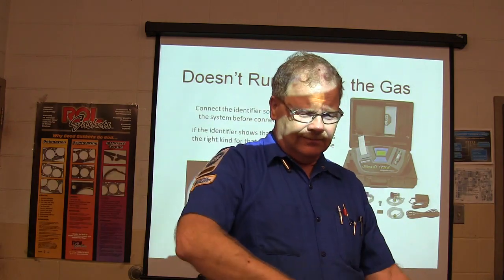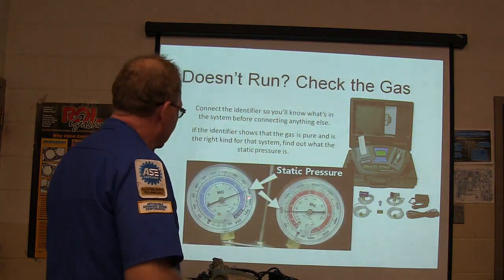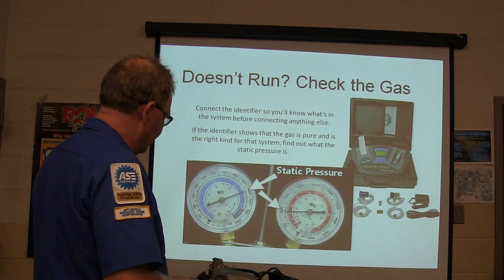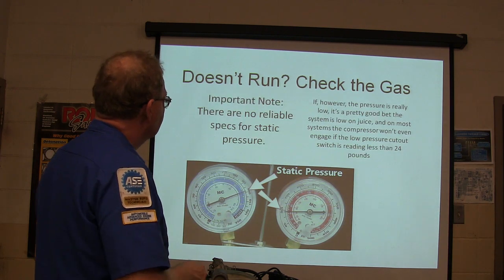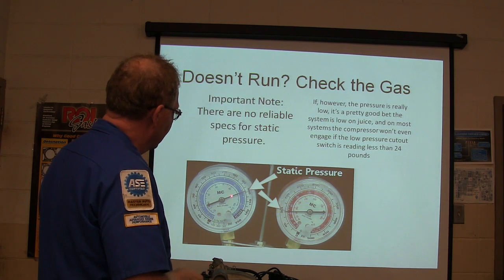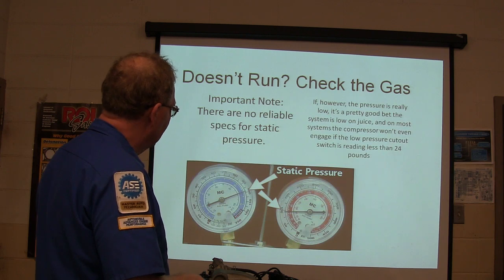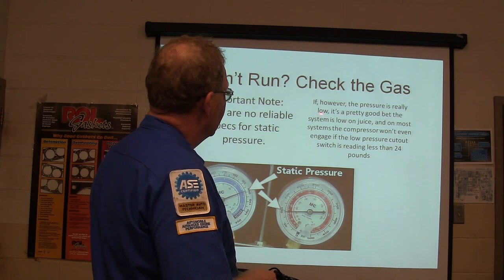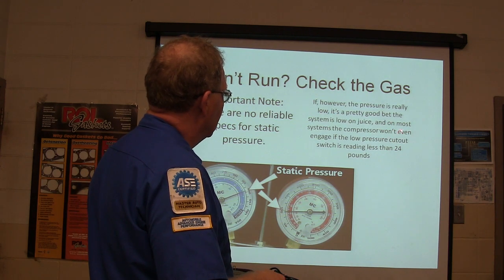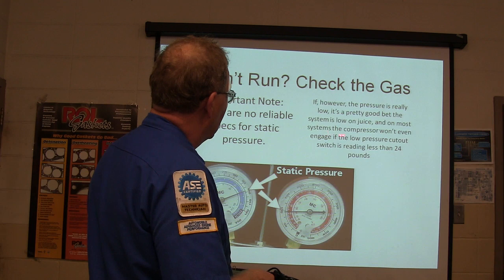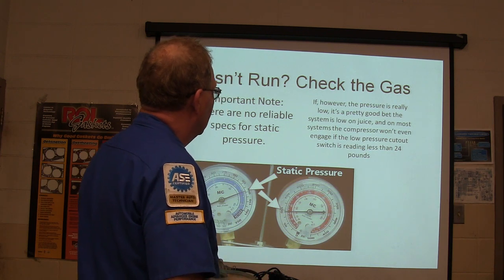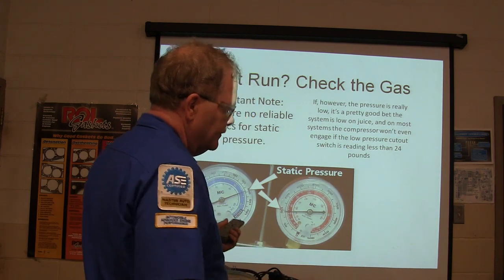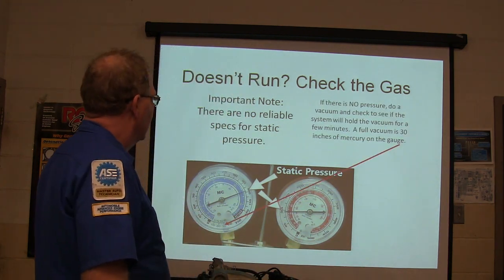There aren't any perfect numbers for static pressure, but 100 pounds on both gauges looks pretty good. Note that the gauge ranges differ — one goes to 500, one to 350. If the pressure is really low, the system is likely low on charge and the compressor won't even engage because of the low-pressure switch. You can look at the static pressure and determine whether the compressor ought to be running based on where the switches cut in.